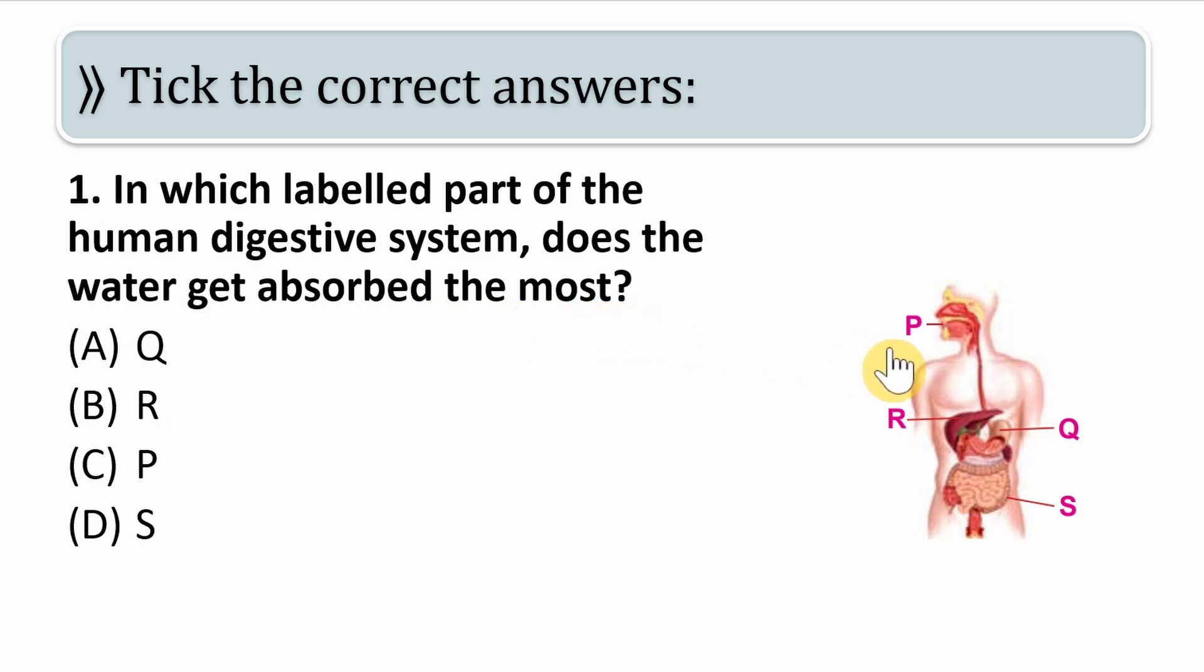Here are the different parts that they have shown. P which is in the mouth, then Q which is the stomach, then R which represents the liver, and S is the large intestine. So in which part does the water get absorbed most? Your time starts now.